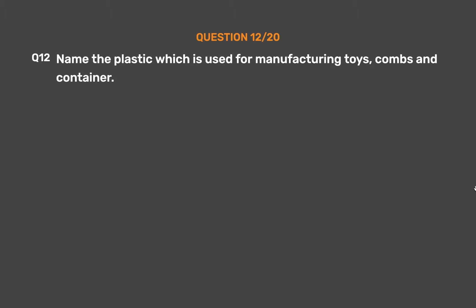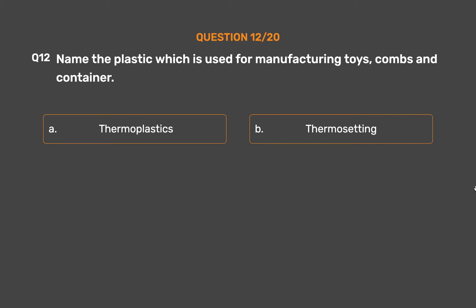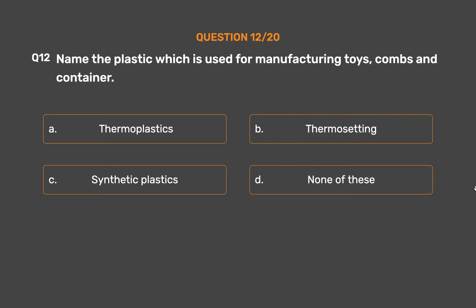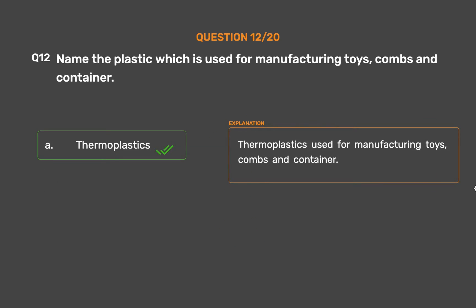Question Number 12. Name the plastic which is used for manufacturing toys, combs and containers. Option A: Thermoplastics. Option B: Thermosetting. Option C: Synthetic plastics. Option D: None of these. The correct answer is Option A: Thermoplastics. Thermoplastics are used for manufacturing toys, combs and containers.